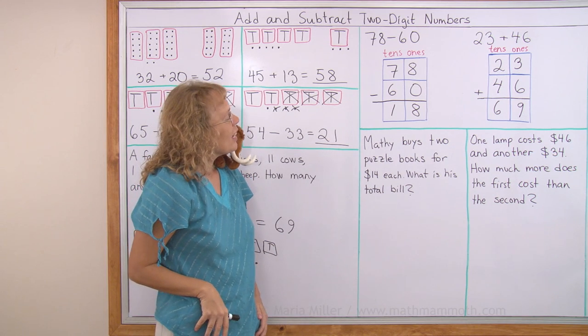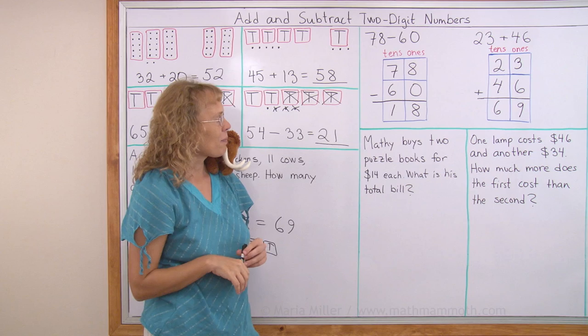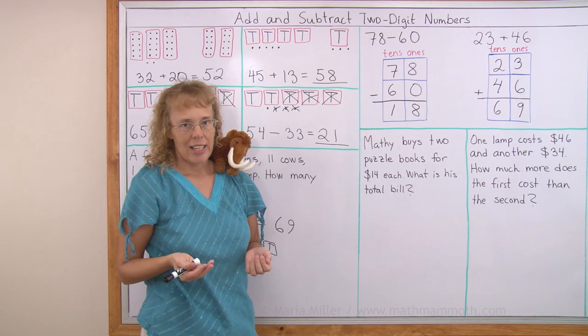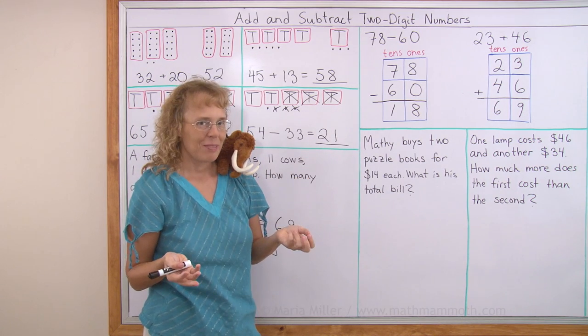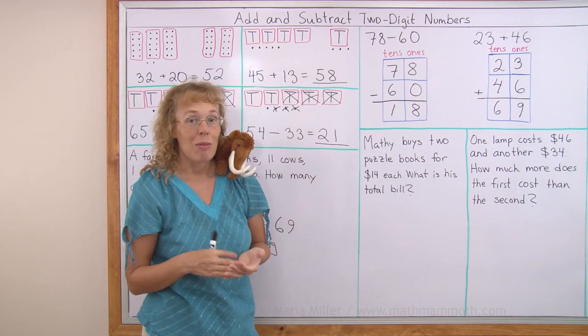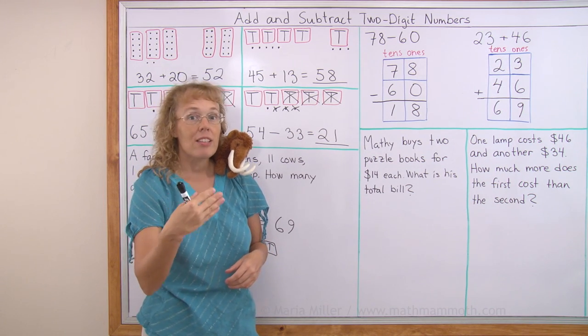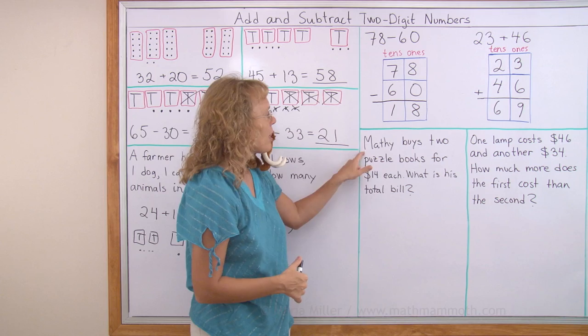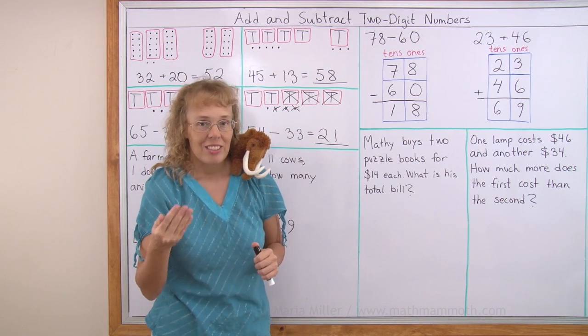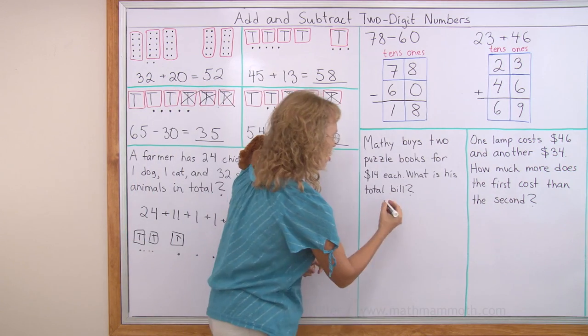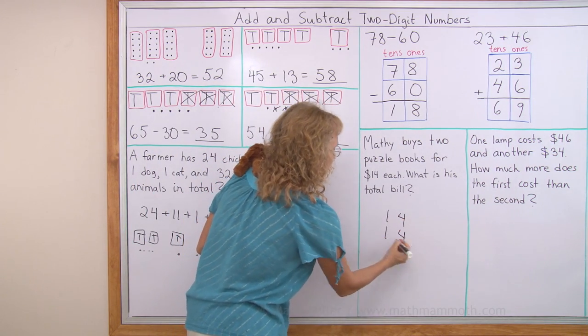Next. Matthew buys two puzzle books for $14 each. What is his total bill? This time I'm gonna use this idea. These boxes. Or writing the numbers under each other. I don't really need to draw the boxes. I just need to write the numbers under each other. Matthew buys two books for $14 each. I need to add 14 and 14, right? So 14 goes here. And the other 14 goes right under it.